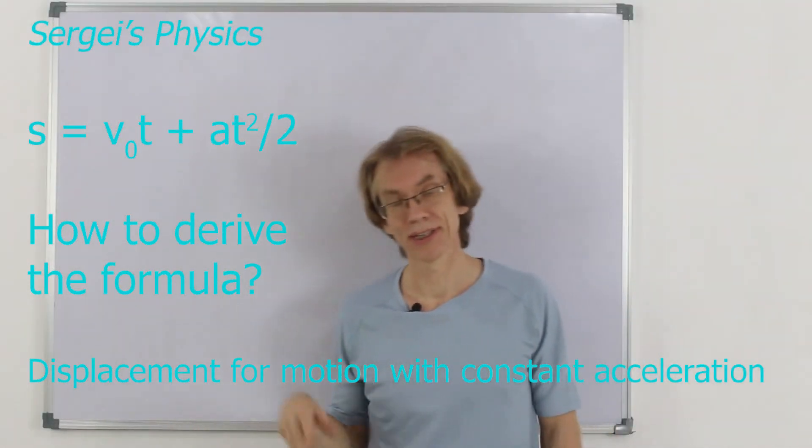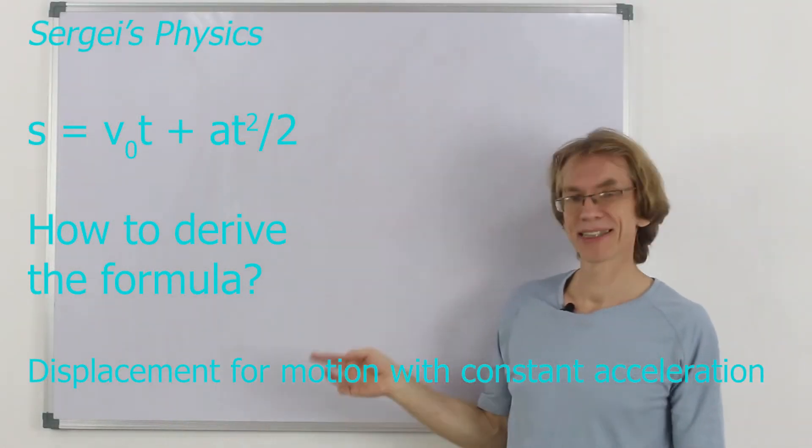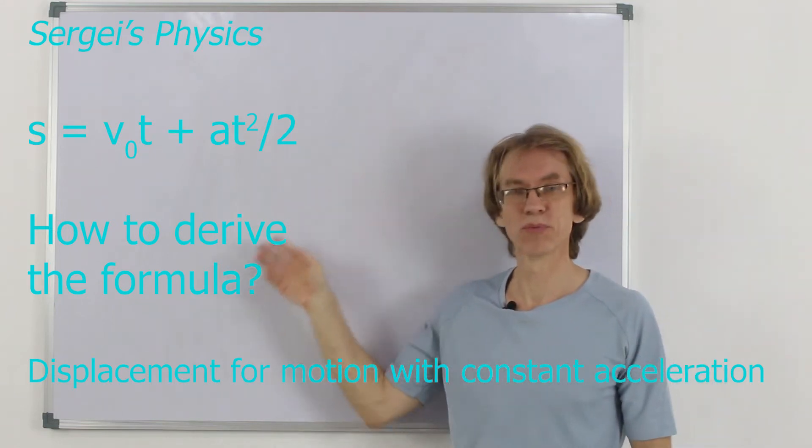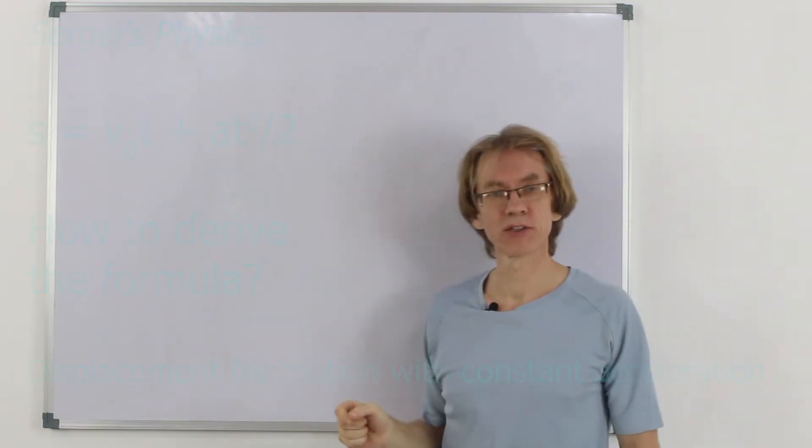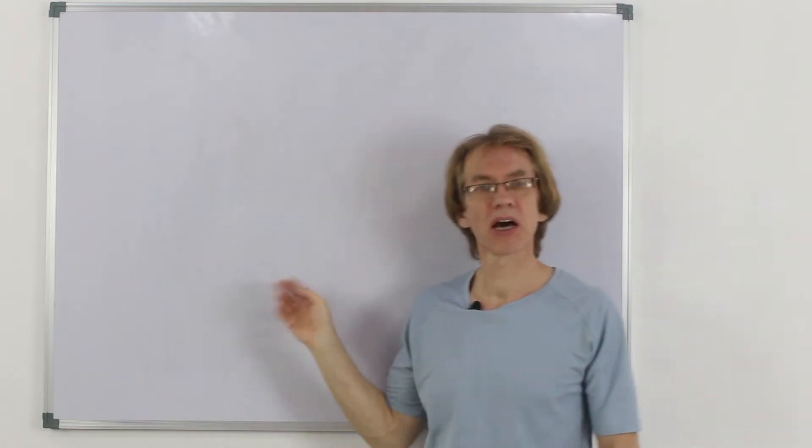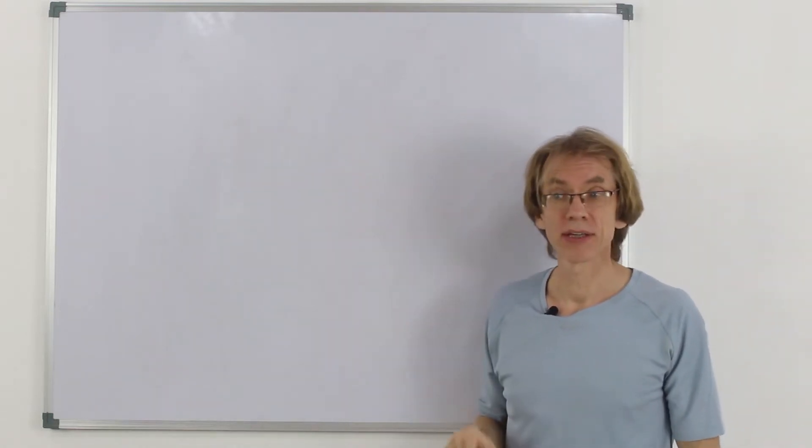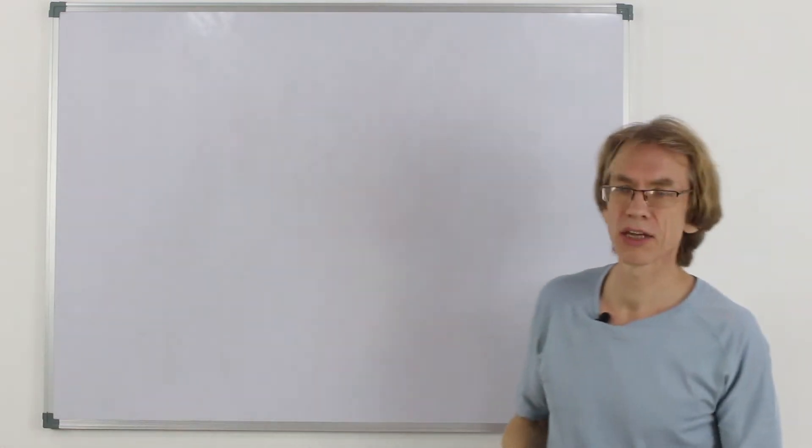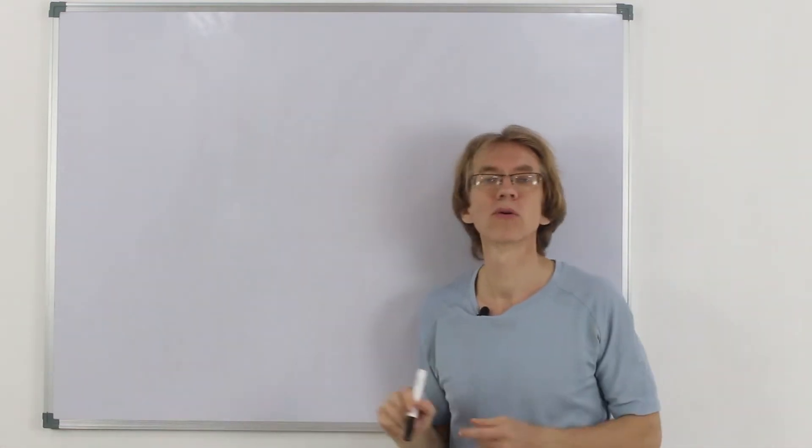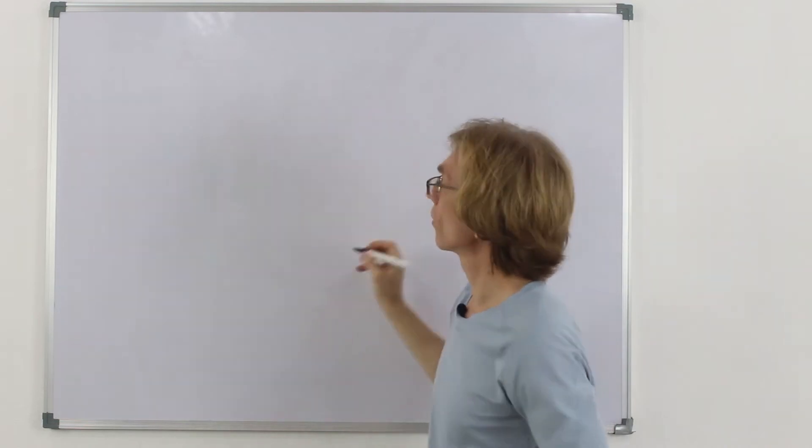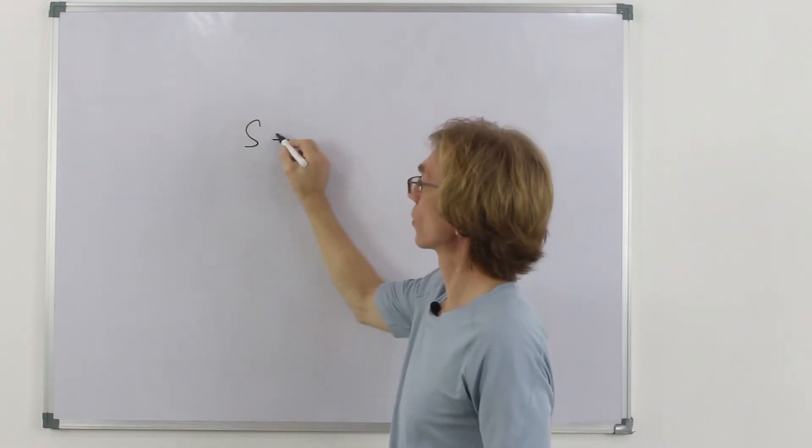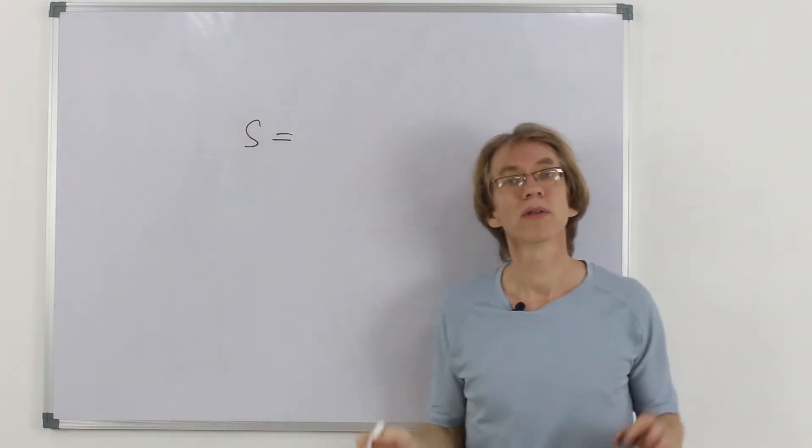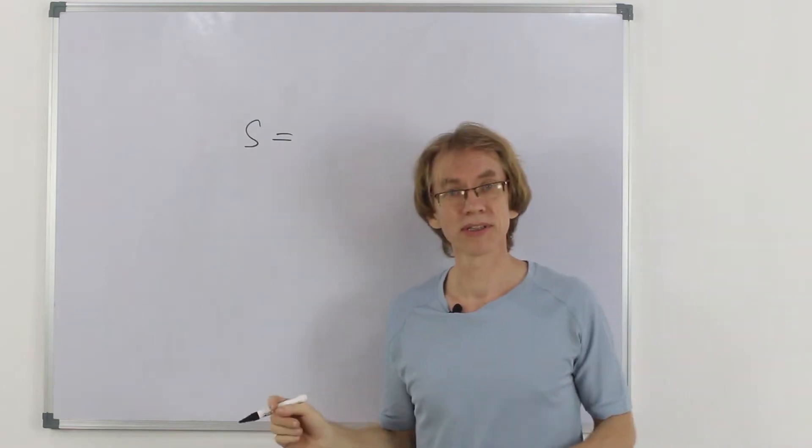There are a few formulas in physics in kinematics. Kinematics is describing how the body moves, how to find its position. Not why, but just how. So, in kinematics there are several formulas which look pretty strange, forbiddingly, and nobody knows where they're coming from. One of them for the displacement during motion with the constant acceleration.